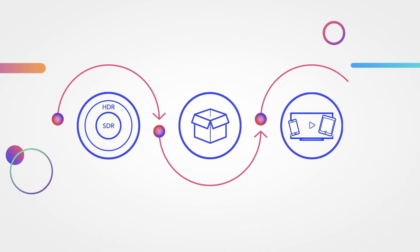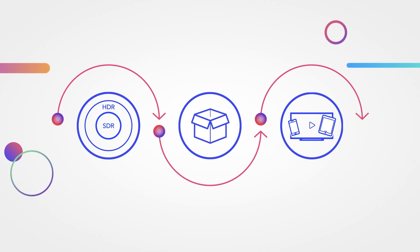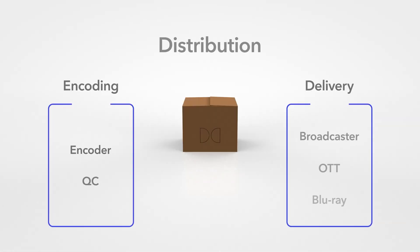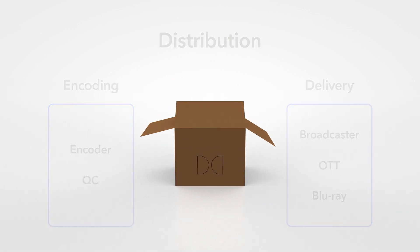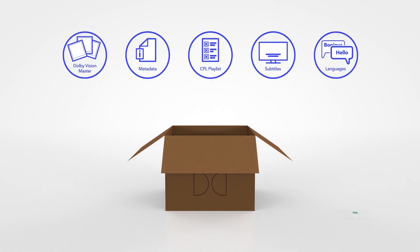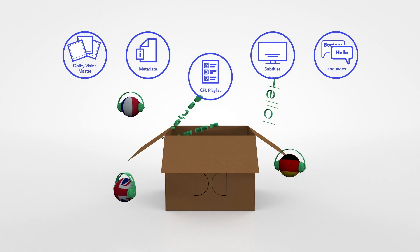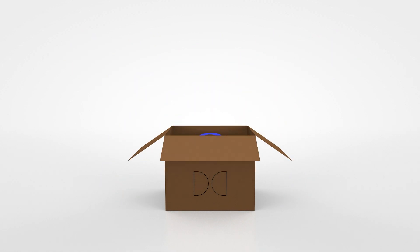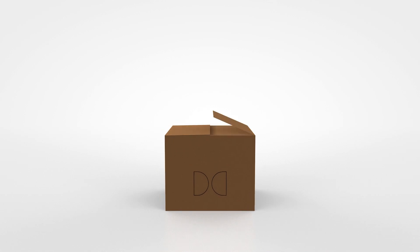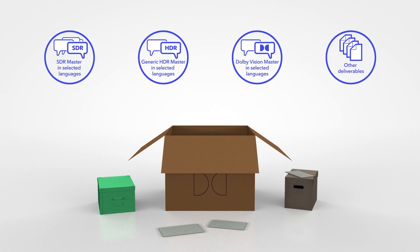QC is simplified as deliverables are derived from the metadata. When you supply a single IMF, for instance, it is like a delivery box where you put all your image and audio masters, language versions and subtitles. It's all there, with no need for extra work.